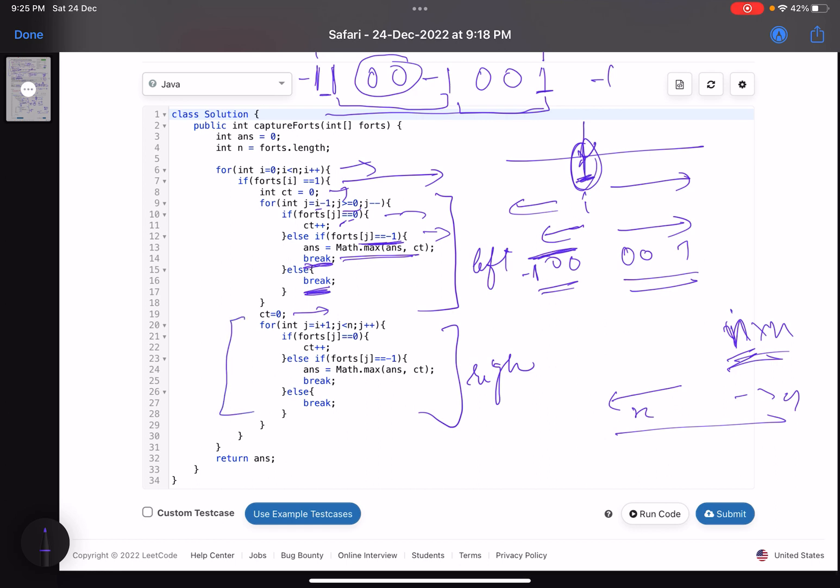Similarly, update your count here. Now you will be moving in right direction. Same thing: count will be incremented when forts[j] is 0. In case of -1, update it. In case of 1, just break the loop. And finally return your answer.